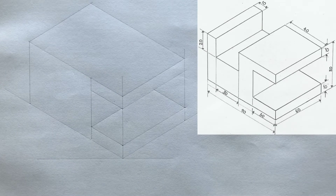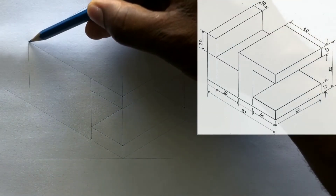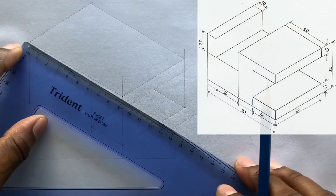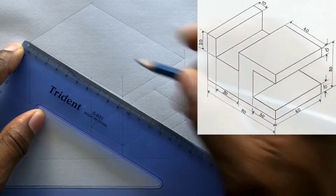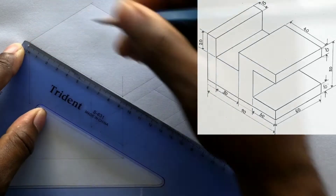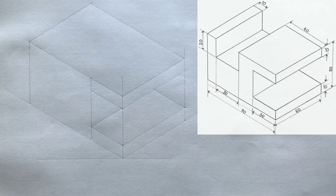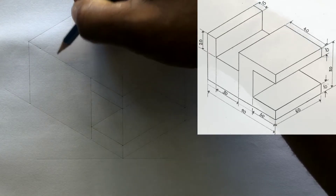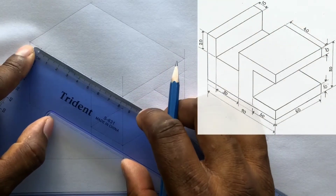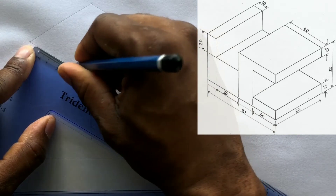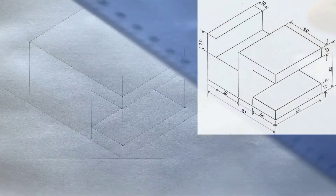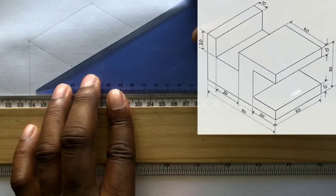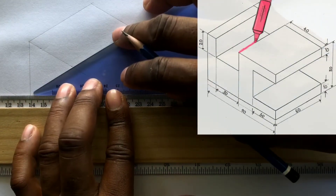Now measure and identify 10 millimeters from this intersection on this line. Then measure and identify from this point 30 millimeters on this line. Use your t-square along with your set square and draw horizontal lines from these two points.